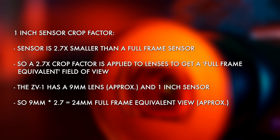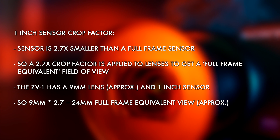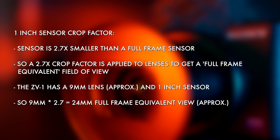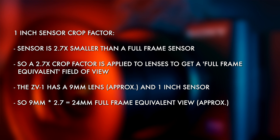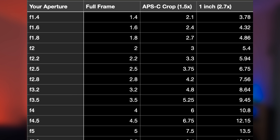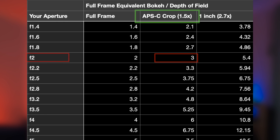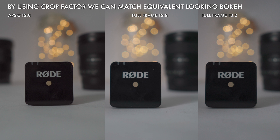The crop factor from a 1-inch sensor to a full frame equivalent is around 2.7 times, which gets us from the 9mm physical focal length of our ZV-1 to a 24mm full frame equivalent field of view. Well, the same crop factor rules broadly hold true for finding equivalent bokeh and depth of field between different sensor sizes. If you set your aperture to f2 on an APS-C sensor and want the same look on your full frame camera, you can apply the 1.5 times crop factor and work out that f3 would be broadly equivalent in full frame. In reality, f2.8 or f3.2 are more likely the settings you've got available.